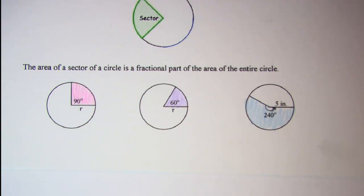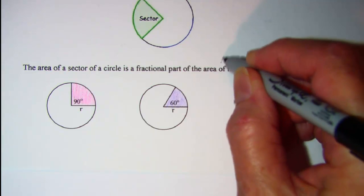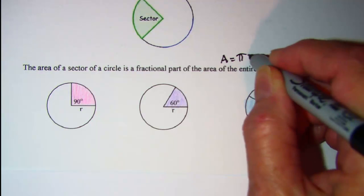The area of the sector of the circle is a fractional part of the area of the entire circle. Now we know that the area of an entire circle is given by the formula area equals pi r squared.